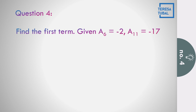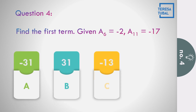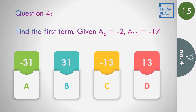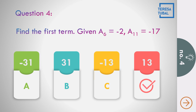Question number 4: Find the first term given that the sixth term equals negative 2 and the eleventh term is negative 17. Options: a) negative 31, b) 31, c) negative 13, d) 30. The answer is equal to 13.